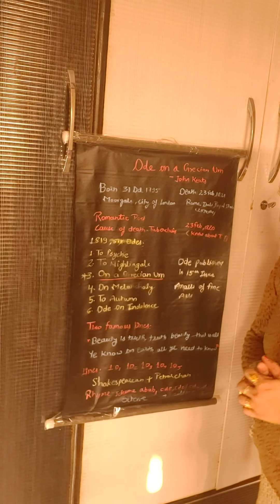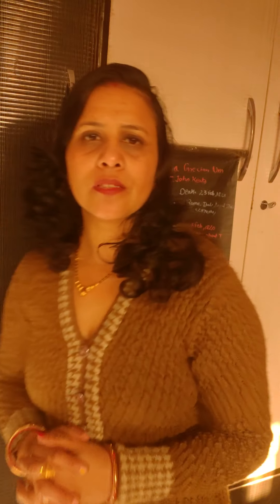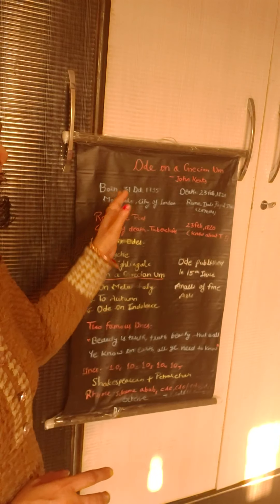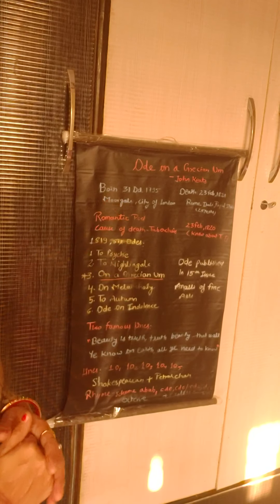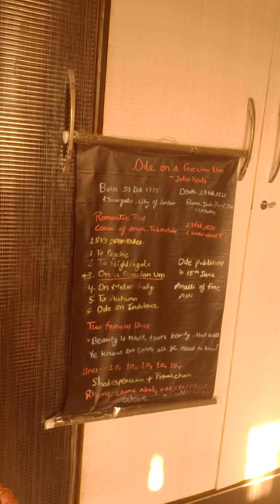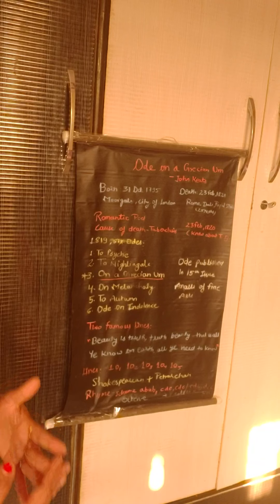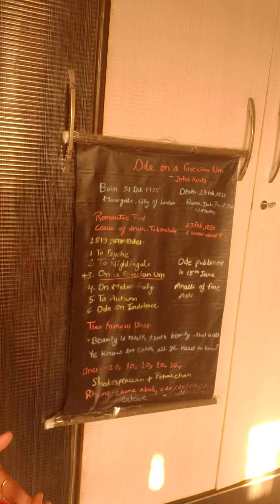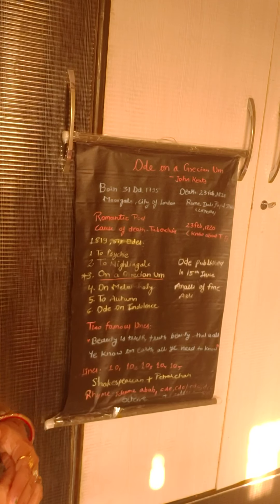'Ode on a Grecian Urn,' written by John Keats. Poet John Keats was born on 31st October 1795 at Moorgate, City of London. He was the youngest of the Romantics, as I already told you, and he died young when barely he was at the age of 25, on 23rd February 1821, at Rome, Italy.